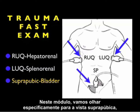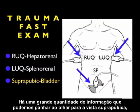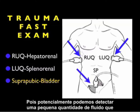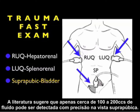In this module, we'll specifically look at the suprapubic view, also known as the bladder or pelvic view of the trauma FAST exam. There's a lot of information we can gain from this view, as we can potentially detect a smaller amount of fluid than is required to make a positive right upper quadrant or left upper quadrant view. The literature suggests that only about 100 to 200 cc's of fluid can be detected accurately on the suprapubic view.